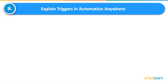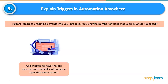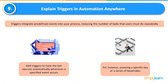Explain Triggers in Automation Anywhere. Triggers integrate predefined events into your process, reducing the number of tasks that users must do repeatedly. In Automation Anywhere, you can use attendant automation to create unique triggers for numerous apps; these triggers can then be used to launch a bot. You can add triggers to have the bot execute automatically whenever a specified event occurs, for instance pressing a specific key or series of keystrokes.